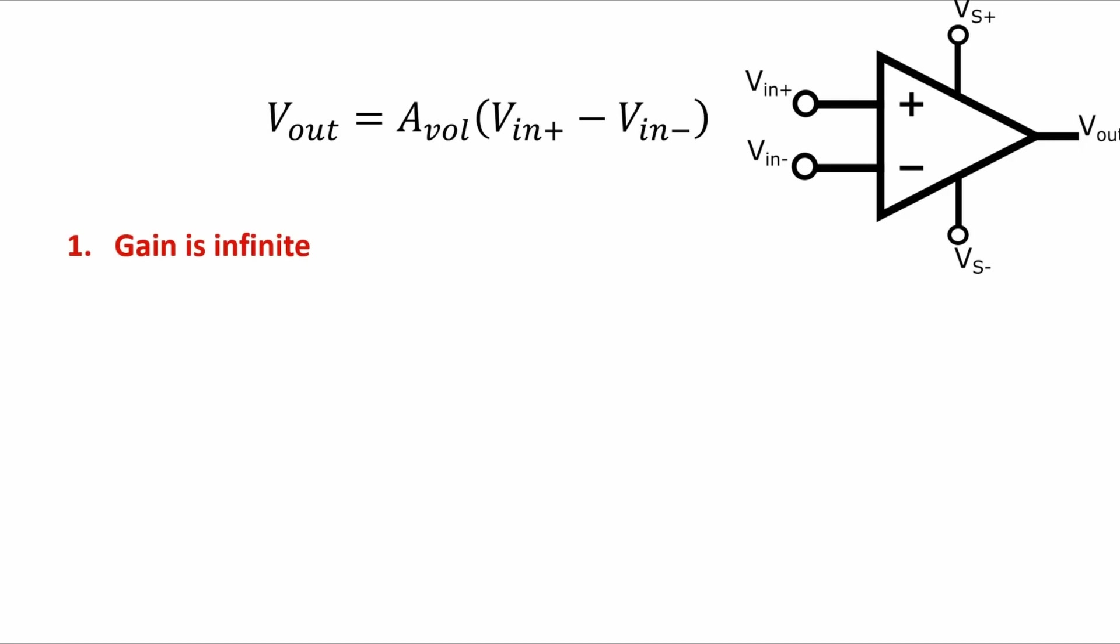The first ideal characteristic is that the gain of the op-amp is infinite. This means that the difference between the two input voltages gets multiplied by a number so huge that the output is going to be either at the maximum positive value or the maximum negative value.